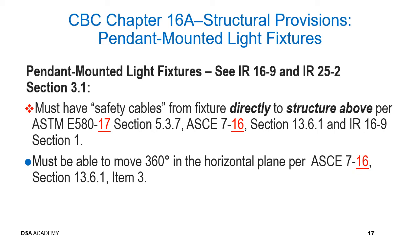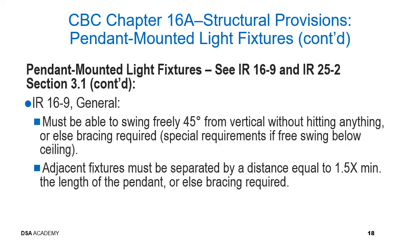Now we are going to review requirements for pendant-mounted light fixtures. Additional information can be found in DSA IR 16-9 and IR 25-2.13 Section 3.1. Pendant-mounted light fixtures must have safety cables from the fixture directly to the structure above, per ASTM E580 Section 5.3.7, ASCE 7 Section 13.6.1, and IR 16-9 Section 1. The light fixture must be able to move 360 degrees in the horizontal plane per ASCE 7 Section 13.6.1 Item 3.